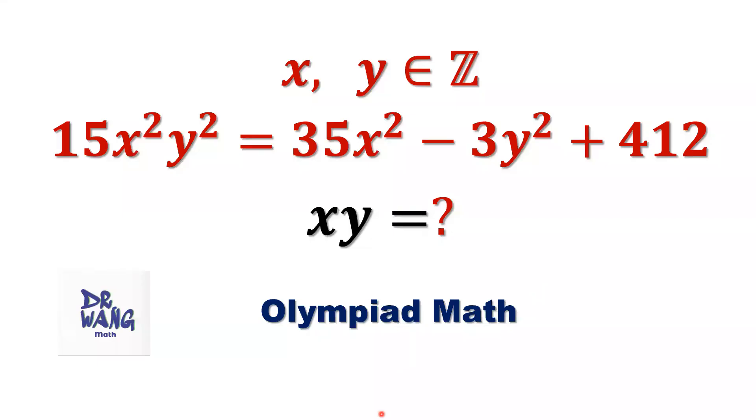Hello everyone, I'm Dr. Wen. Here is the question. If x and y are integers, 15x²y² = 35x² - 3y² + 412, what is the value of the product xy?